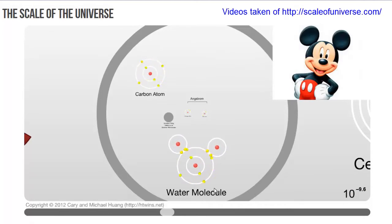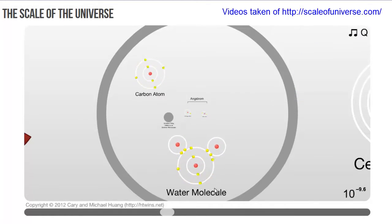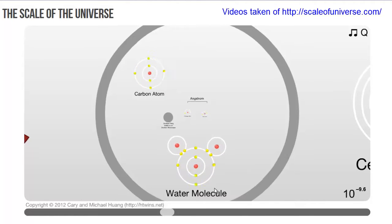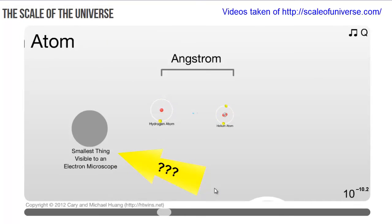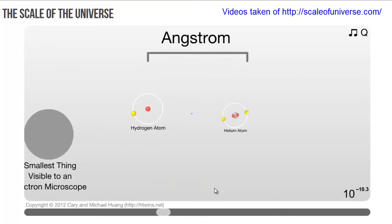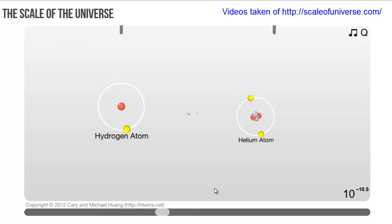Altogether, they look kind of like Mickey Mouse's head. A carbon atom is shown in the upper left hand corner, as well as this spot that's the smallest thing visible to an electron microscope, apparently, and the two smallest elements, hydrogen and helium.